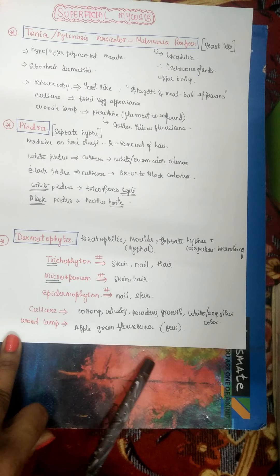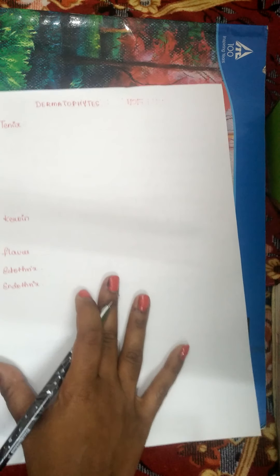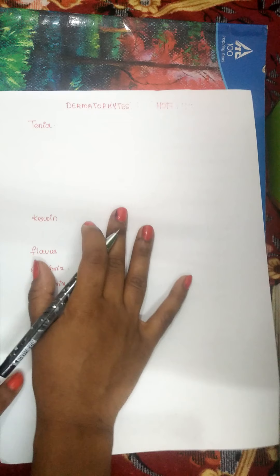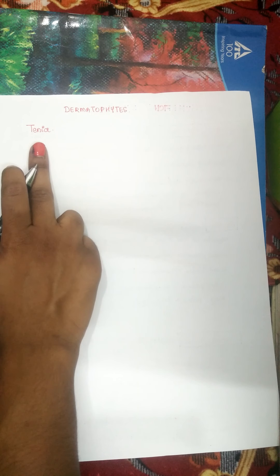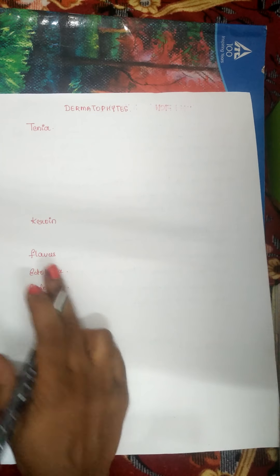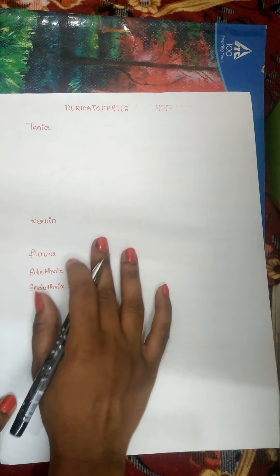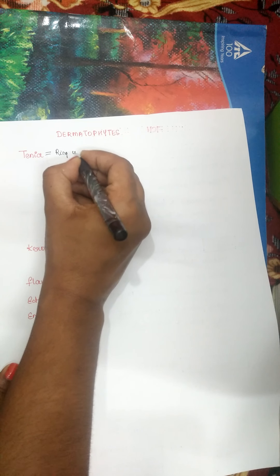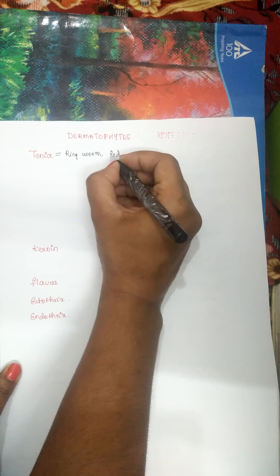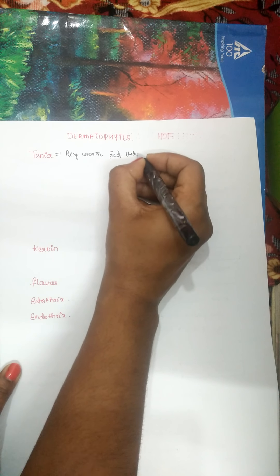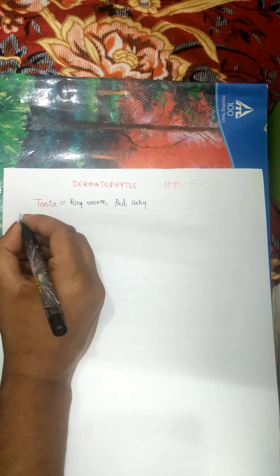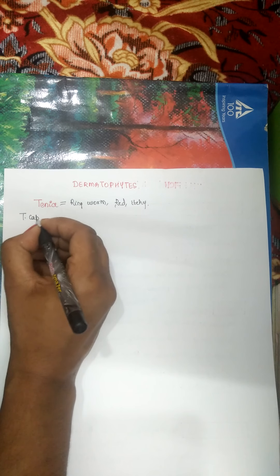Dermatophytes can cause tinea — also known as ringworm — with red, itchy lesions. Additionally they can cause kerion, favus, ectothrix, and endothrix infections. The tinea lesions are named by body site: if it affects the head, it is called tinea capitis.